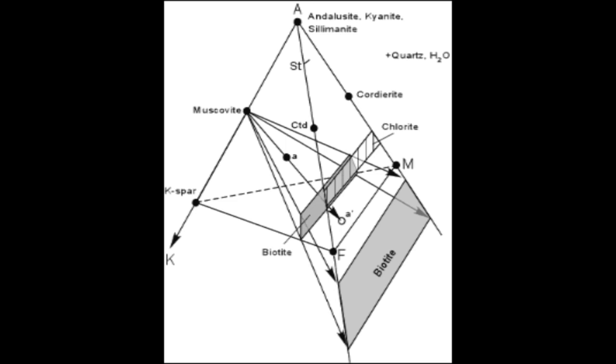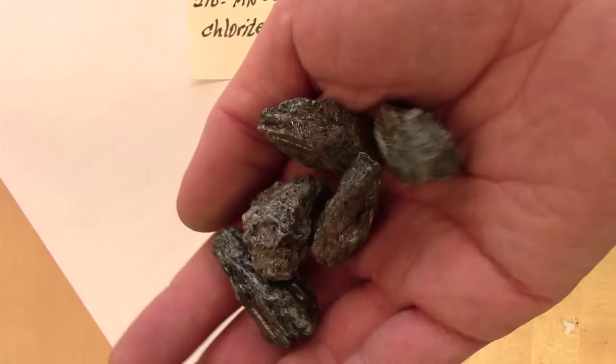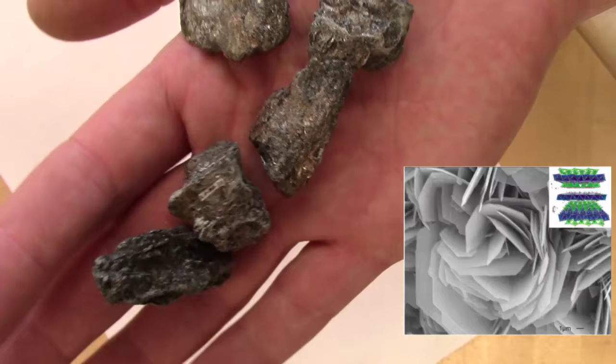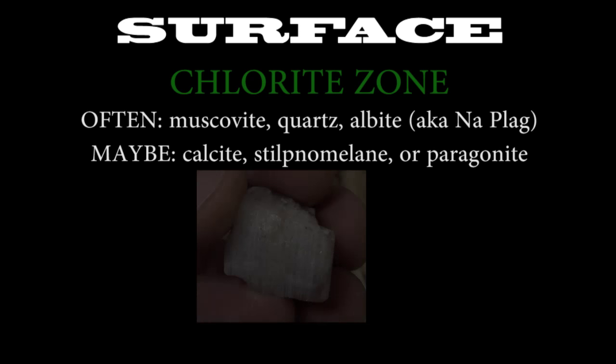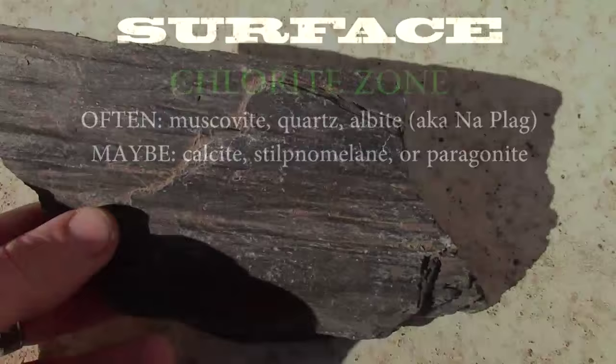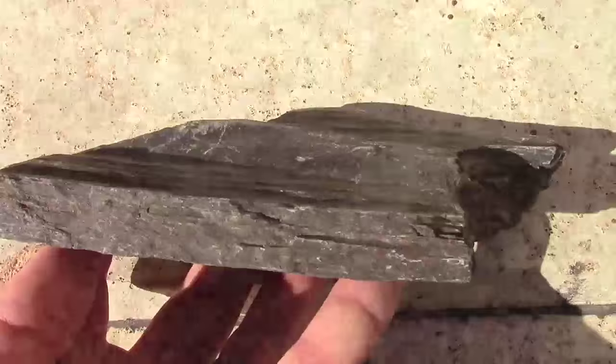It is enough for us to point out that the lowest metamorphic zone is the chlorite zone, which begins when the mineral chlorite first appears. We also tend to see associated minerals in this zone, and albite is the name we give the sodium-rich end member of the plagioclase feldspar solid solution. The chlorite zone tends to start in slate, persist to phyllite, and even to schist, which if the schist is dominated by chlorite is called a green schist.